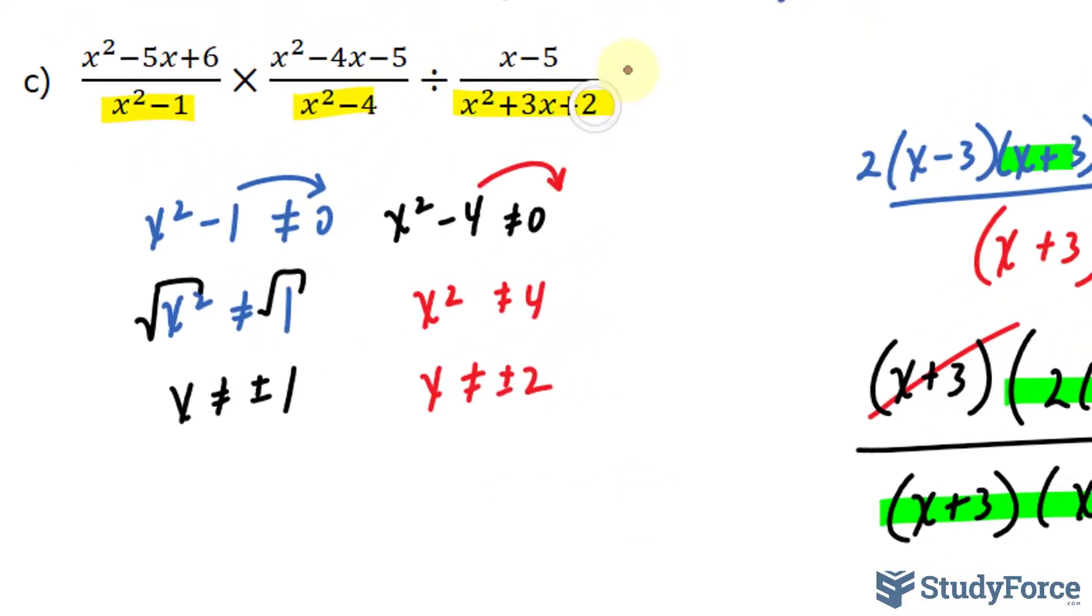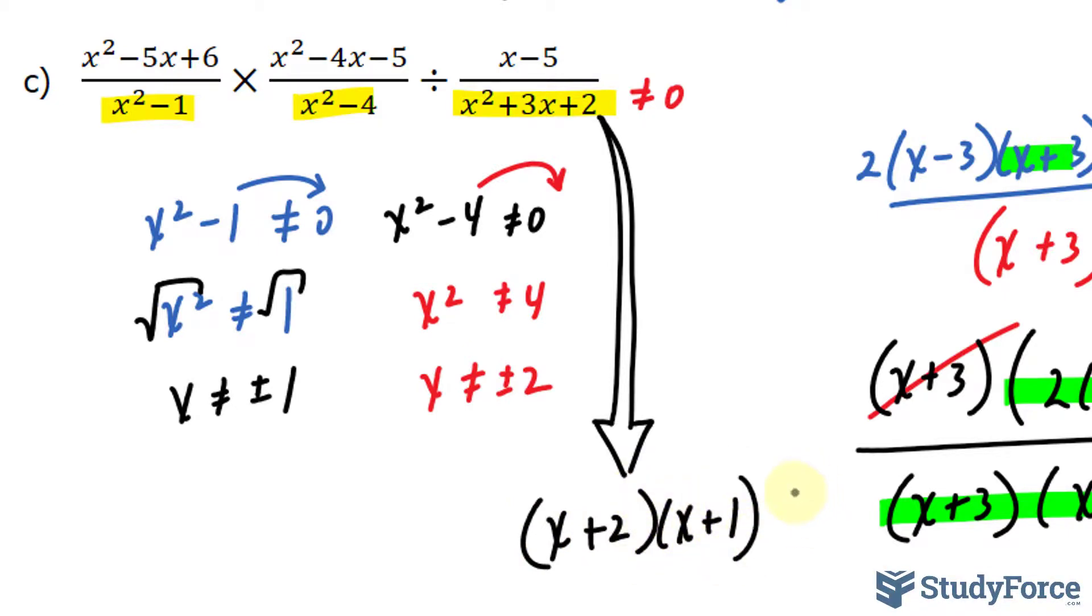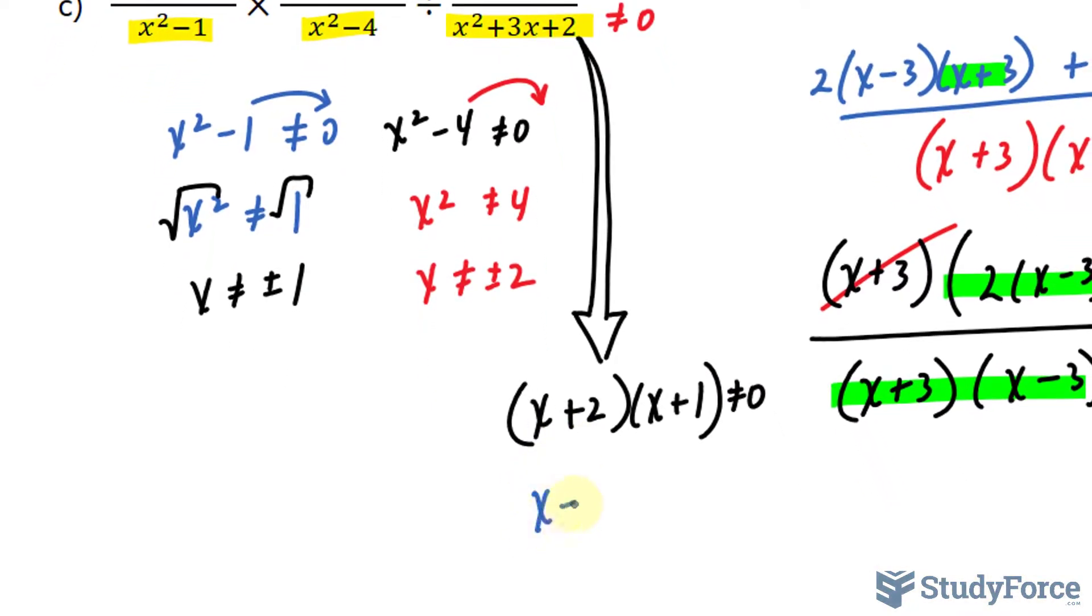If I set this as not equal to 0, I would need to factor this quadratic. And this quadratic is factorable through trial and error, that technique, which I've shown in previous videos. So what two numbers multiply to 2 and add to 3? That combination is positive 2 and positive 1. So setting this not equal to 0, I should get x cannot equal negative 2, which I found earlier already. So I don't need to repeat it. And x cannot equal negative 1, which I've found earlier as well.